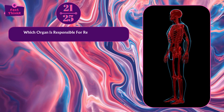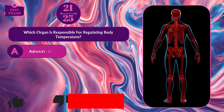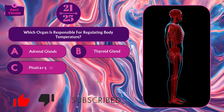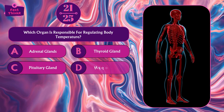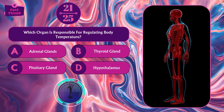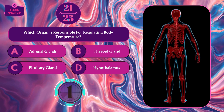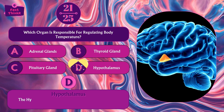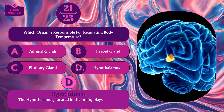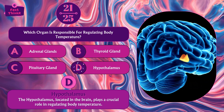Which organ is responsible for regulating body temperature? Adrenal glands, thyroid gland, pituitary gland, or hypothalamus? Option D — hypothalamus. The hypothalamus, located in the brain, plays a crucial role in regulating body temperature.